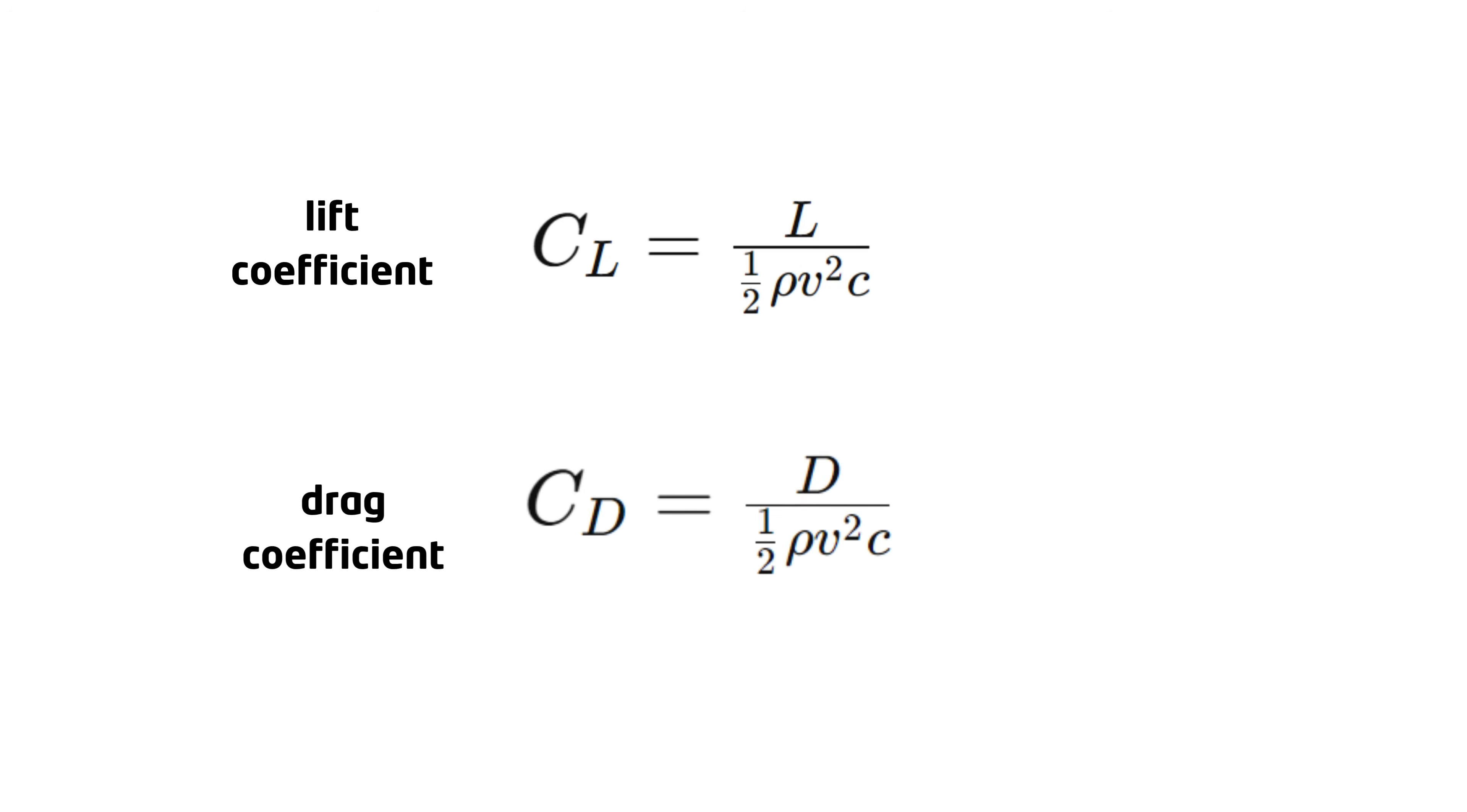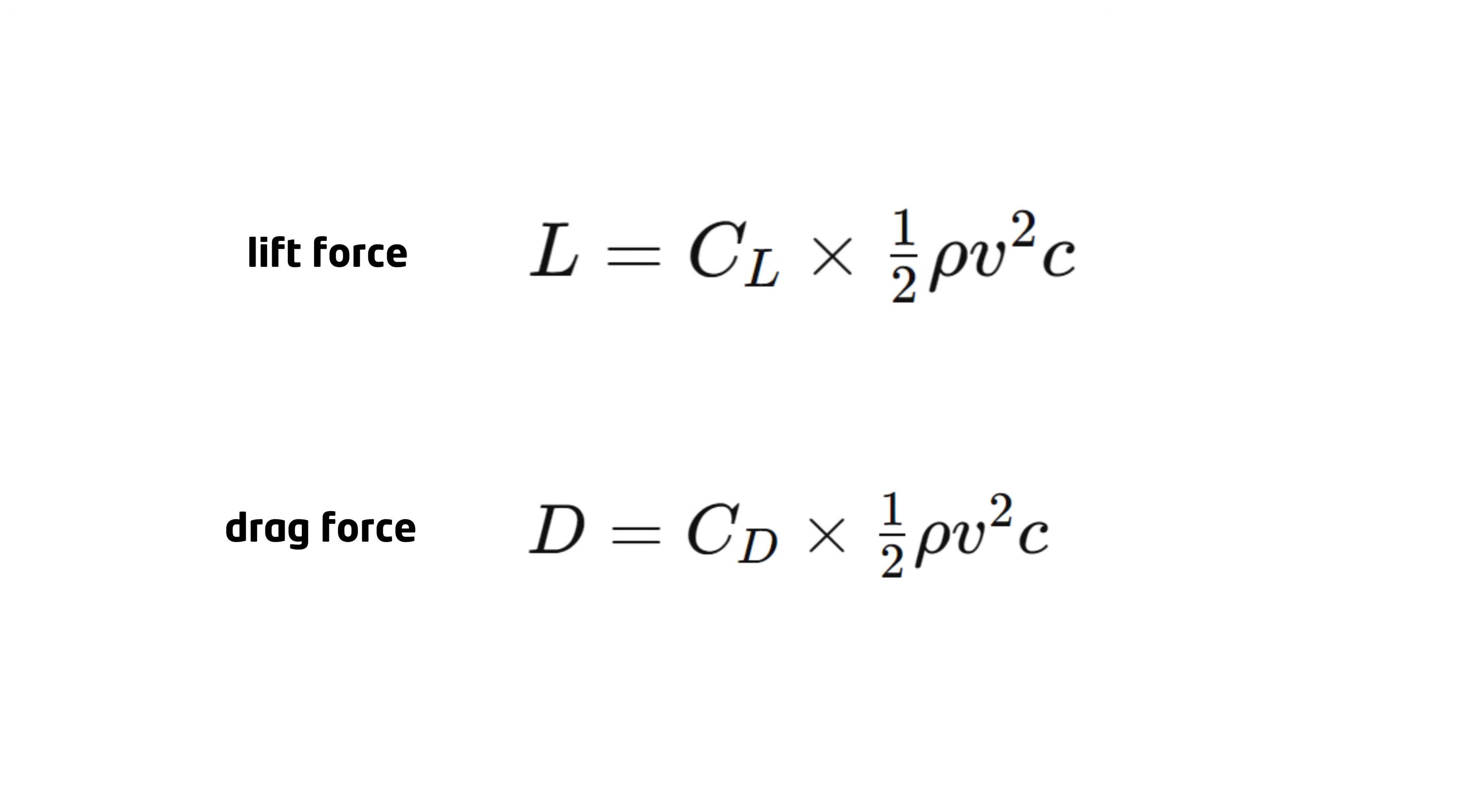You can do the same with the drag force to obtain the drag coefficient. If we rearrange these equations, we can see that the lift and drag generated by an airfoil is proportional to the squared velocity and linearly proportional to the size of the airfoil and the air density. If you know the airfoil's force coefficients, you can simply plug it into these equations and obtain the aerodynamic forces for a specific flow density and velocity condition.